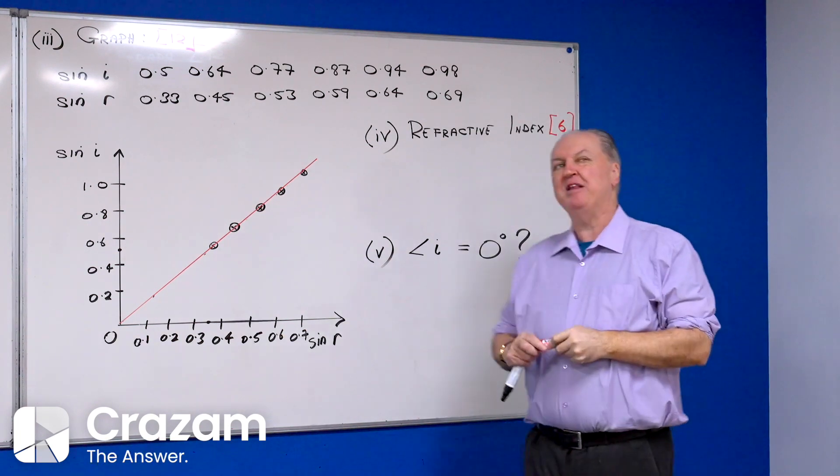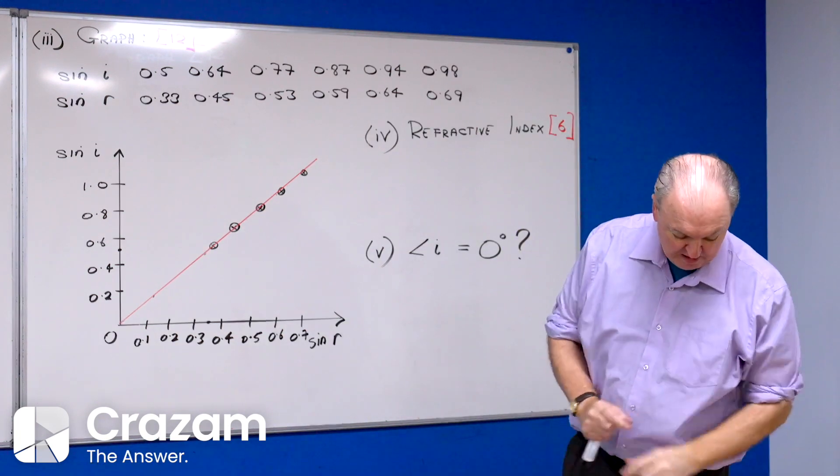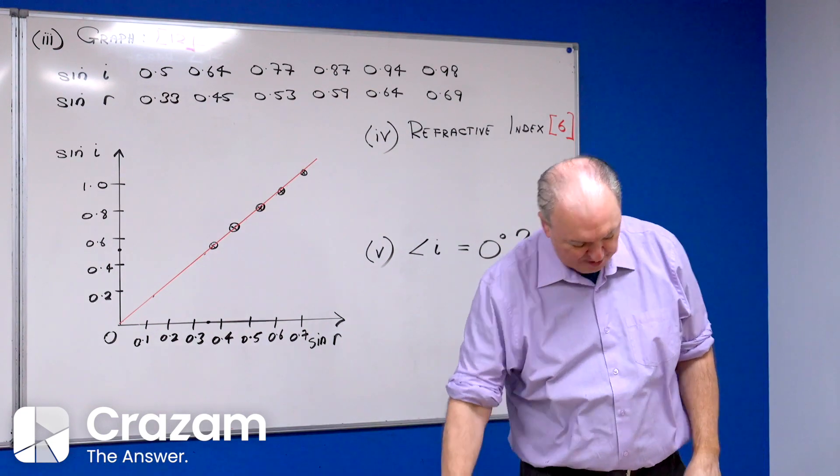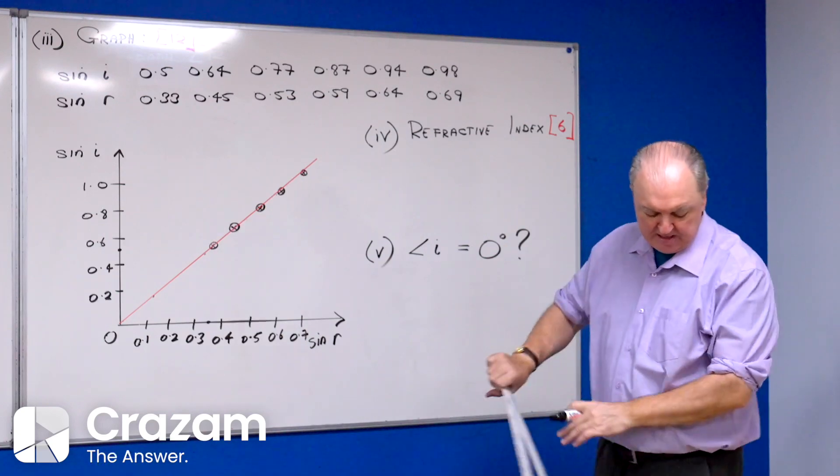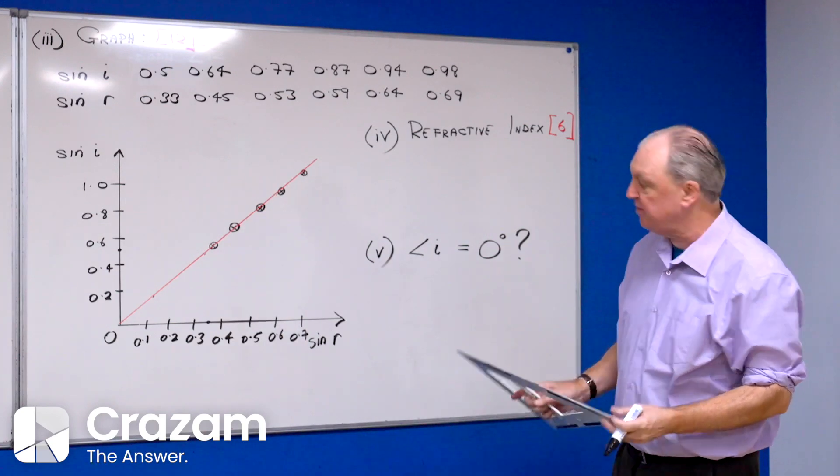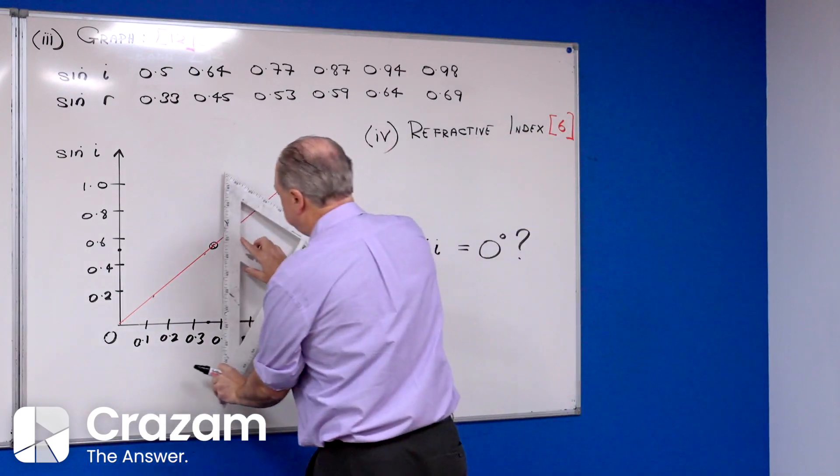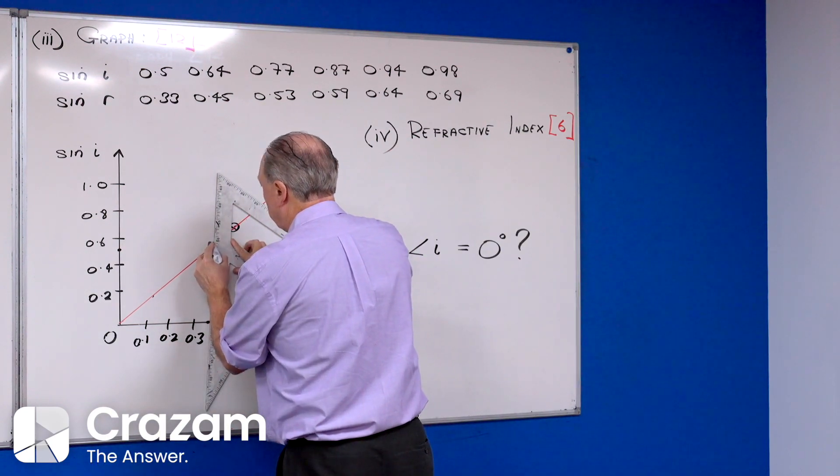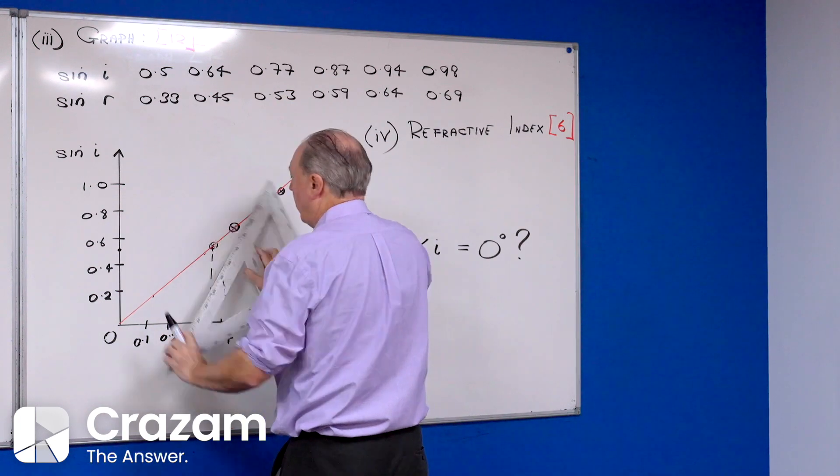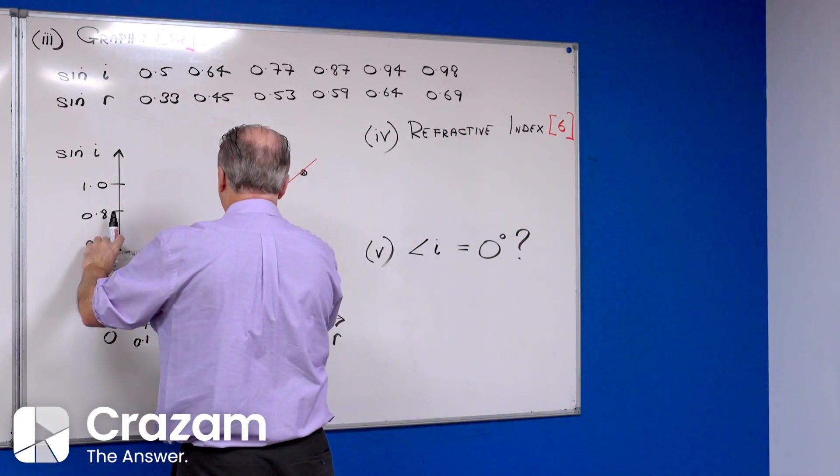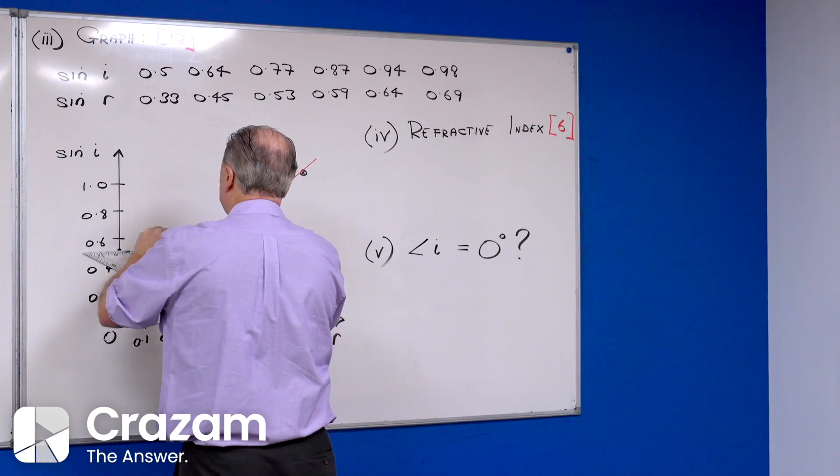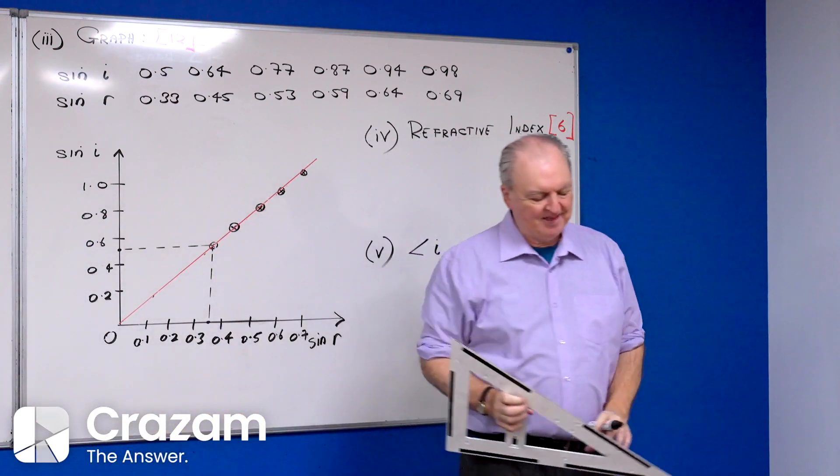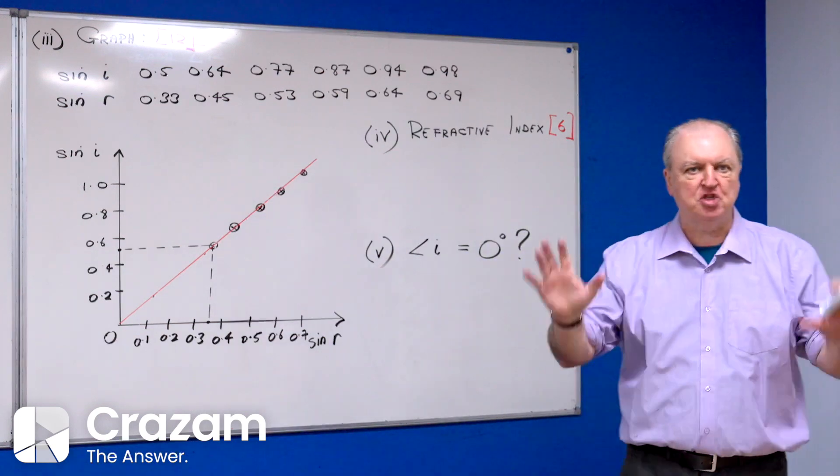That means find the slope of my graph. I'm going to take a point along the sine r axis, let me take the point of 0.35. Go to 0.35 along here, draw a line straight up, draw a line straight across.